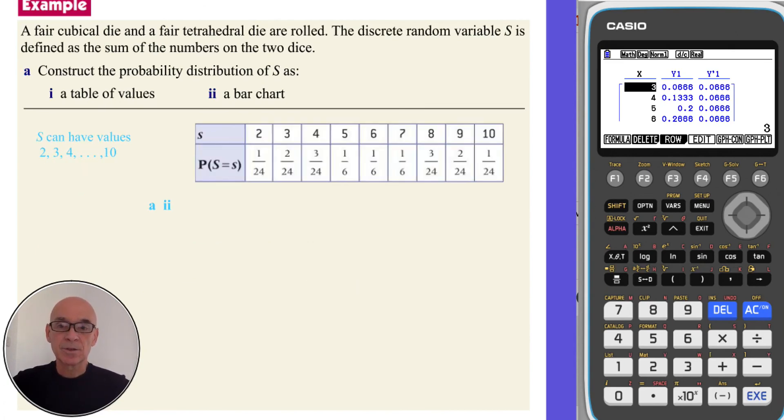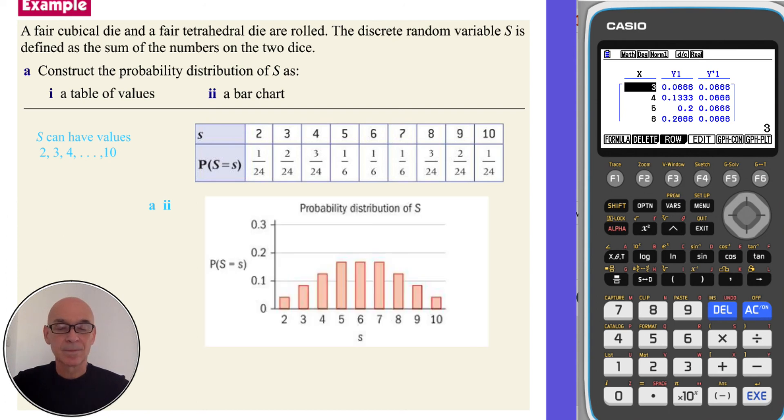Finally, to construct a bar chart, we note again that S can have values 2 to 10. So on the X axis, we'll have values 2 to 10. And on the Y axis, we will show the probabilities. As shown in the diagram here. You will notice that the bar chart is symmetrical. And this is an example of a symmetrical probability distribution.